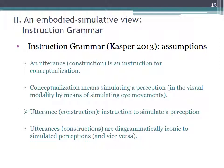The embodied-simulative theory in the context of which I want to discuss these questions is my own model of an Instruction Grammar. Its basic assumptions are quite simple. First, an utterance and its underlying construction is an instruction for conceptualization. Second, conceptualization means simulating a perception, for example in the visual modality, where it is simulating eye movements. This in turn means that utterances and their underlying constructions are instructions to simulate a perception. Fourth, utterances are diagrammatically iconic to simulated perceptions and vice versa. I will briefly comment on each of these points.